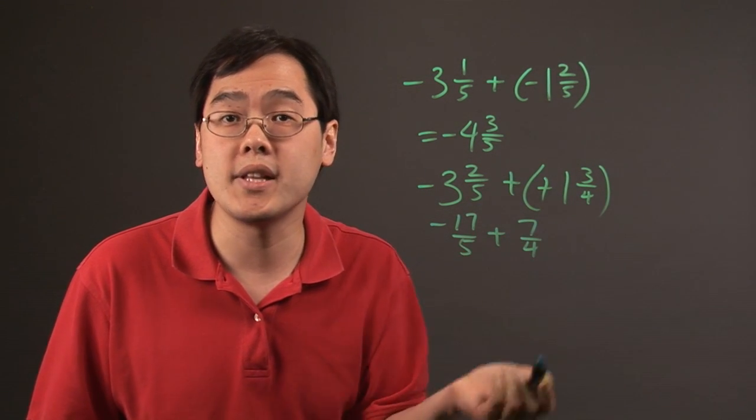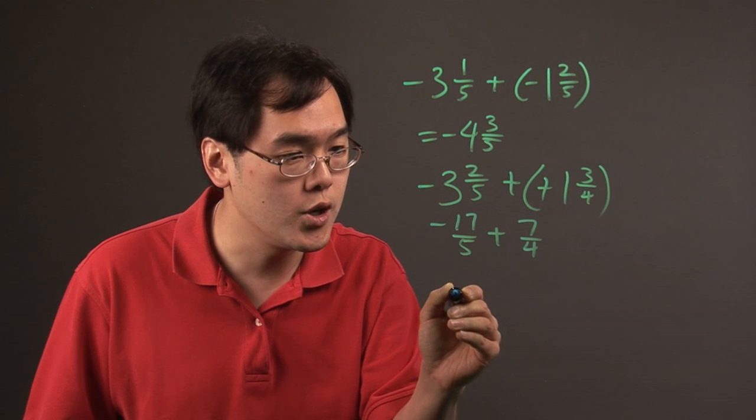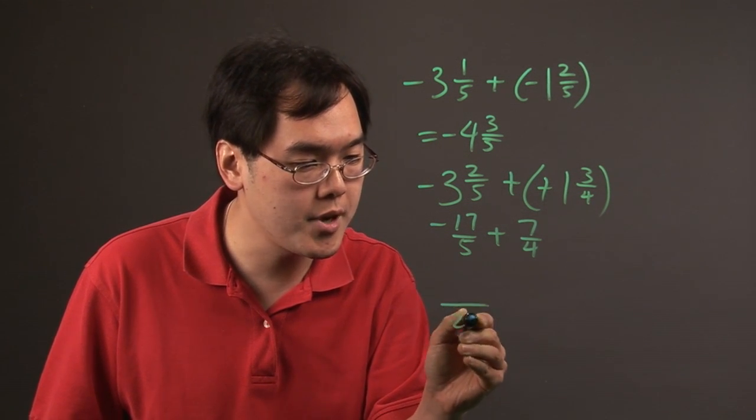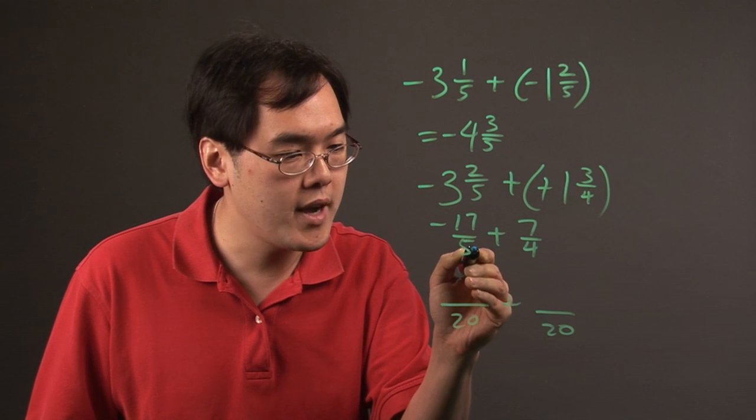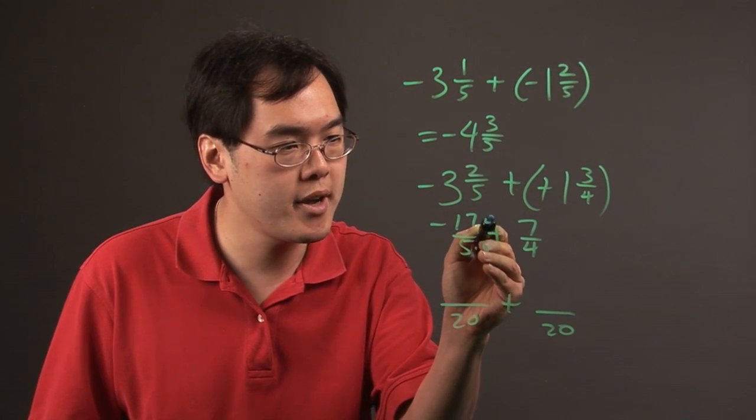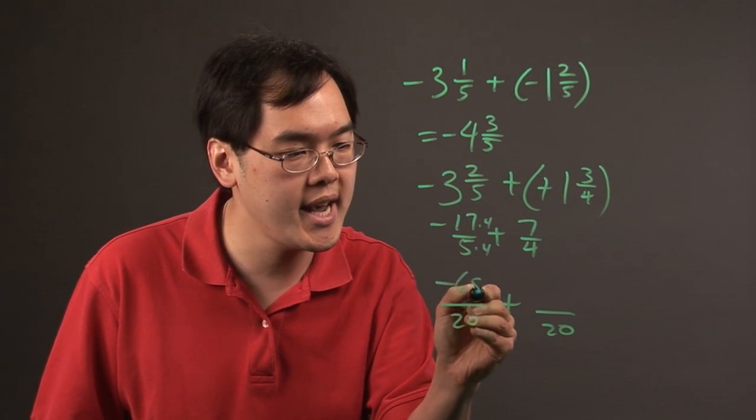And what you want to do is find the least common denominator here. And so least common denominator looks like to be 20. So five times four is going to be 20. So you're multiplying the top and bottom by four. So that's going to be negative 68.